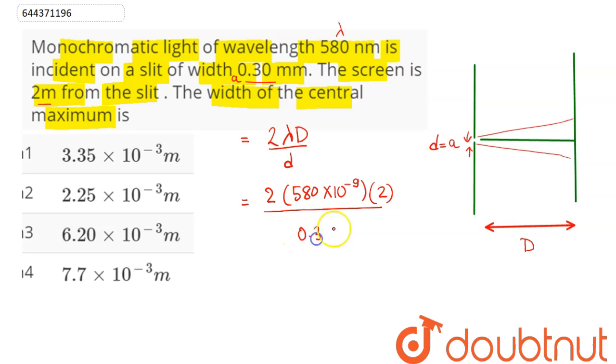So this comes as 0.3 mm means 0.3 into 10 power minus 3. On simplification, the width of the central maximum comes to be 7.7 into 10 raised to power minus 3 meter.